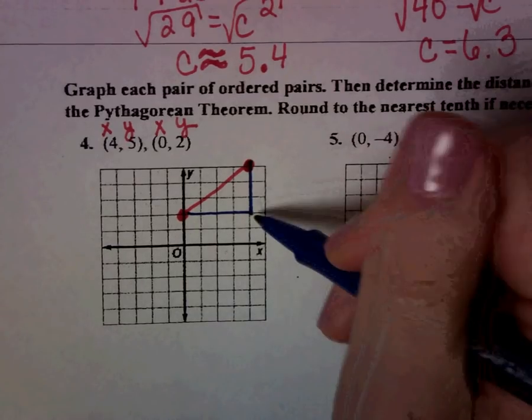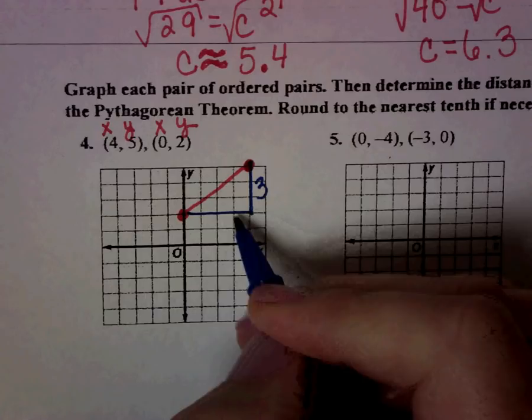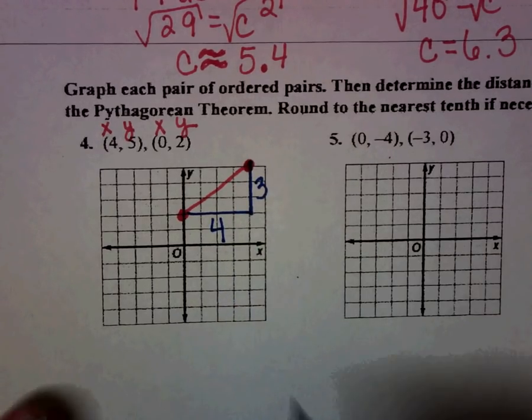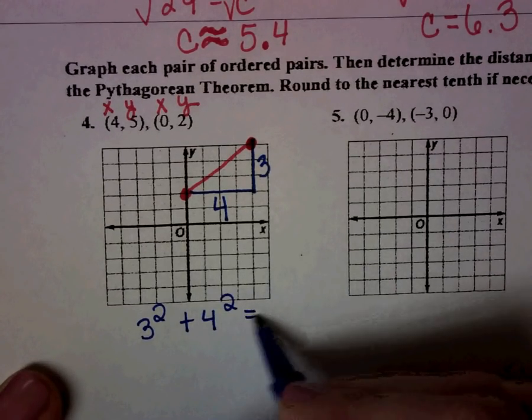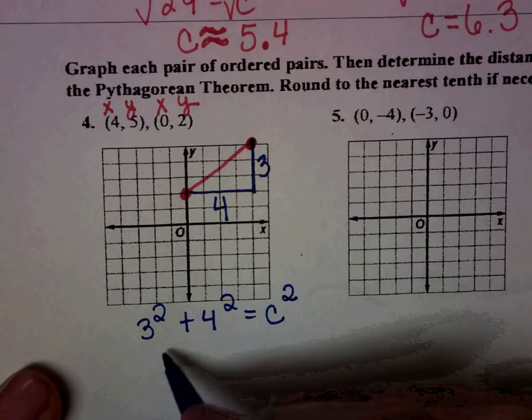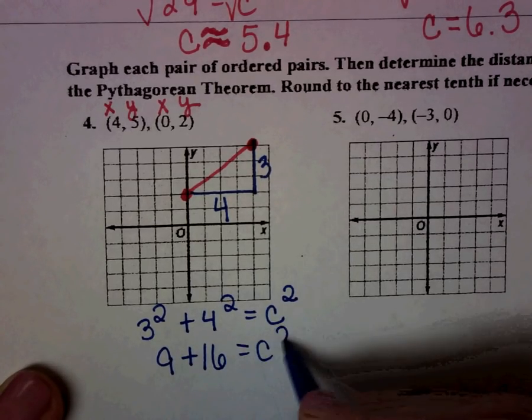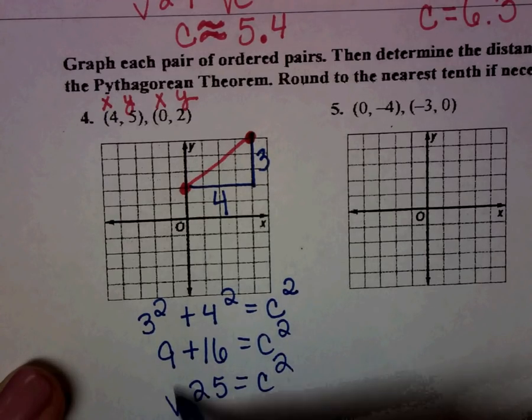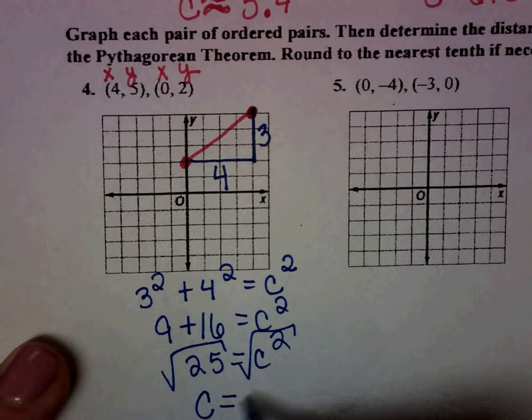And again, I'm going to count my sides. 1, 2, 3. 1, 2, 3, 4. And again, I'm going to fill in the Pythagorean theorem with my information. This would be 9 plus 16, which is 25. And then our last step is to take the square root. And so we would get C equals 5.